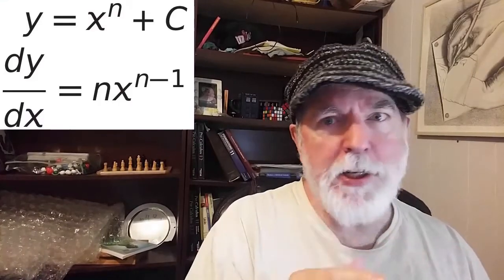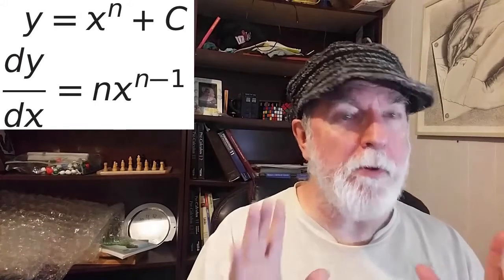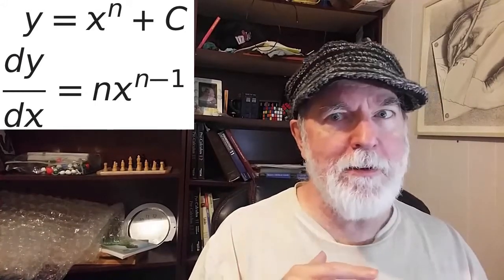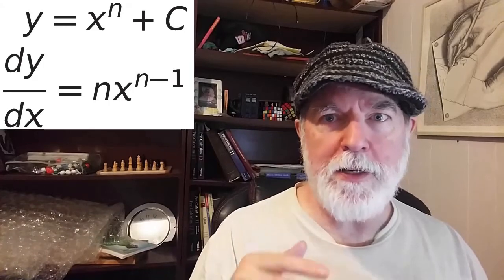It didn't have to be 5. It could have been just about anything, really, as long as it's constant. If y equals x cubed plus c, where c is just some unchanging number, a constant, then dy by dx is always going to be 3x squared.